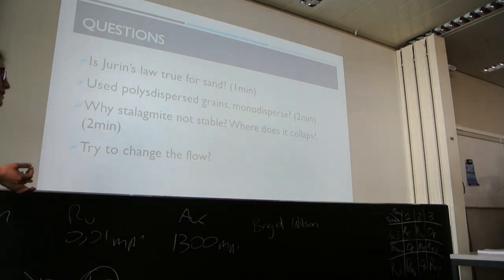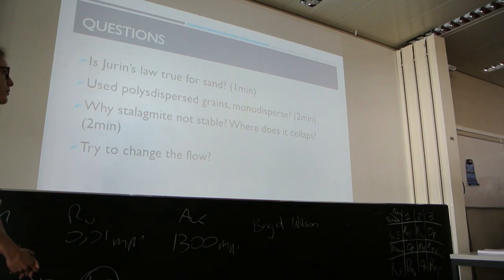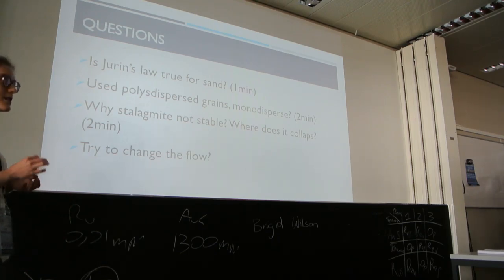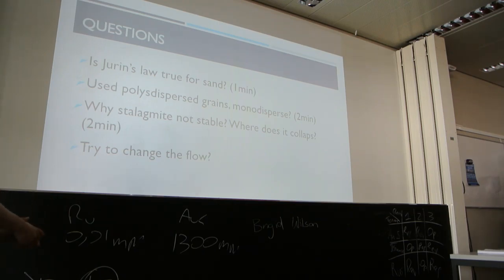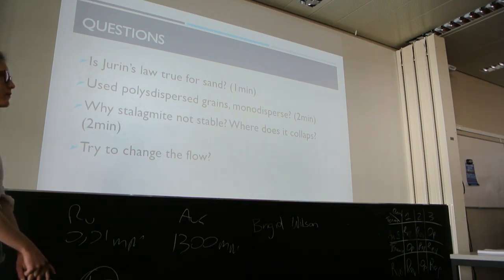Regarding polydisperse versus monodisperse grains: monodisperse sand would probably relate better to theory because you have a more consistent distance between all the grains and can control the grain size. With polydisperse sand, smaller grains fit into gaps so you can achieve higher compacting, which should mean a higher tower because you have a more concentrated amount of sand with greater stability. However, this would also change the capillary rise because you'd have different distances between grains — making it harder to model.